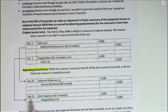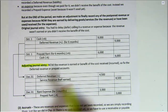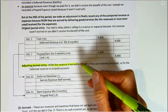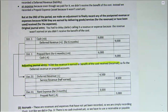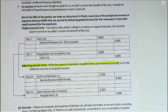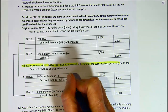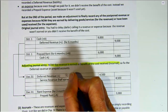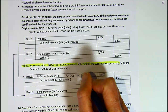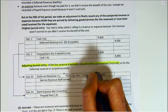Now it's December 31st, and revenue has been earned and the benefit of the cost has been received. So we need to fix the balances in the deferred revenue and prepaid rent accounts. To figure out how much of that revenue we've earned, we'll assume it's earned evenly. So we divide the $9,000 by six months, and that would be $1,500 per month.